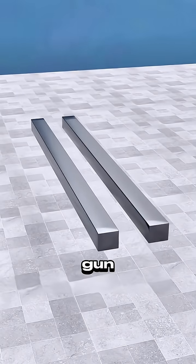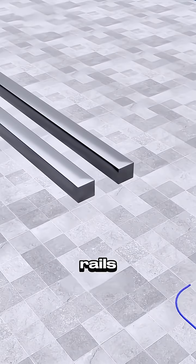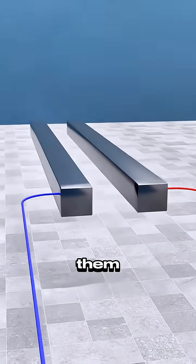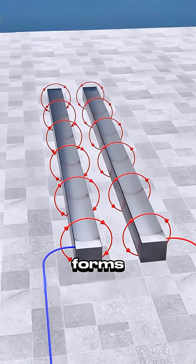Today we're building a railgun. Start with two parallel metal rails. Run a massive current through them, a powerful magnetic field forms between them.